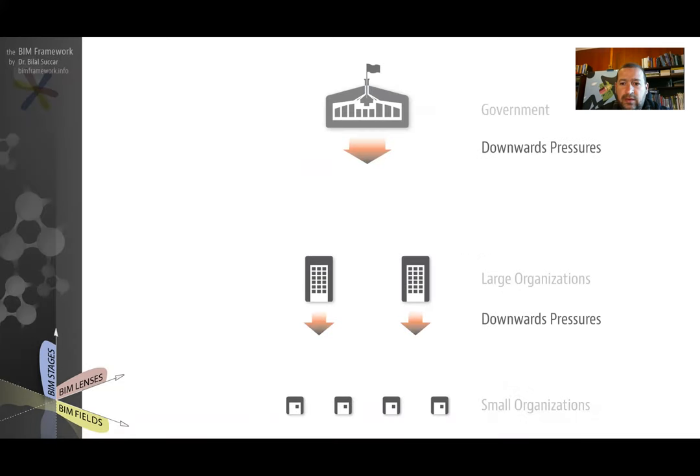If we look again at government and large organizations, typically the diffusion dynamic is a downward pressure. It's a combination of pressures, starting with a downward pressure which is referred to as coercive pressure.